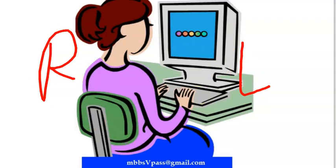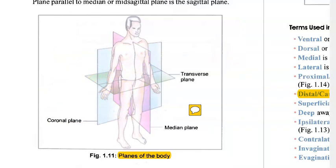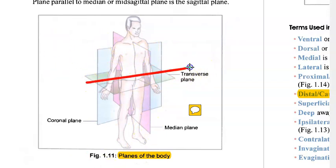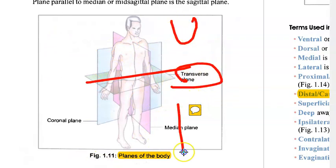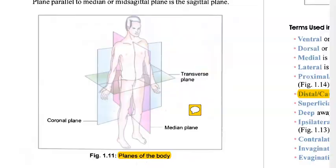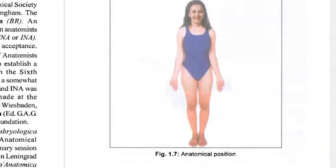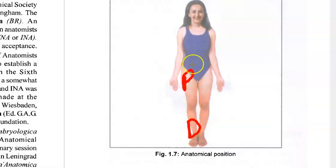The sagittal or median plane divides the body into right and left. The transverse plane divides the body into upper and lower. Important terminologies: proximal means near to a reference point, and distal means far away from it.